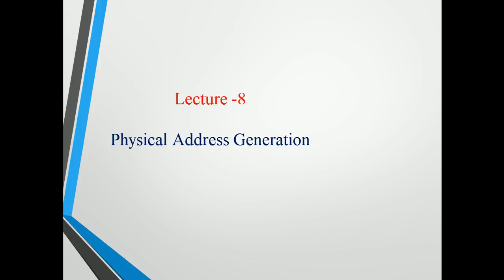In the previous lecture we discussed about segmentation. What is the meaning of segmentation and why do we need it? We know that the 8086 microprocessor has 20 address lines but only 16-bit registers. It is not possible to store a 20-bit address in a 16-bit register. That's why we go for segmentation — so that with 16-bit registers we can address 1 MB of memory. For more details, go through lecture 7.